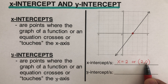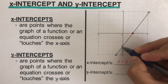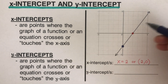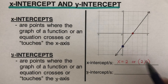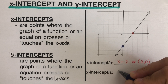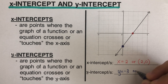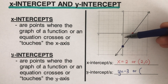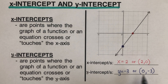Now let's look at the y-intercept. This is the point where the graph crosses or touches the y-axis, which is at negative three. We can write this as y equals negative 3, or in coordinate form as (0, -3). The y-intercept is the value of y when x is zero.